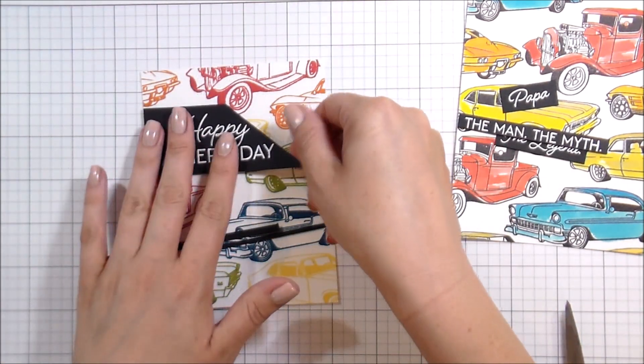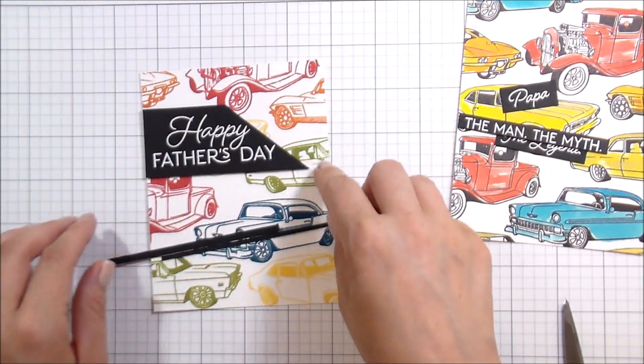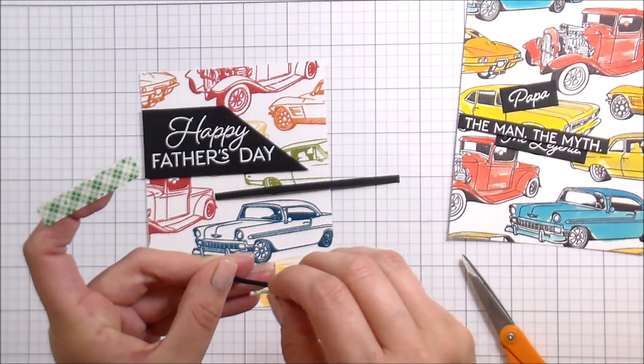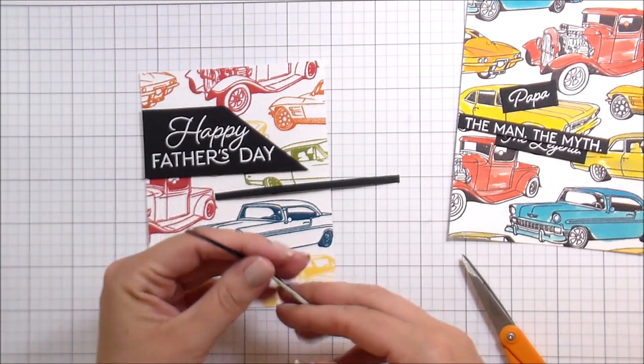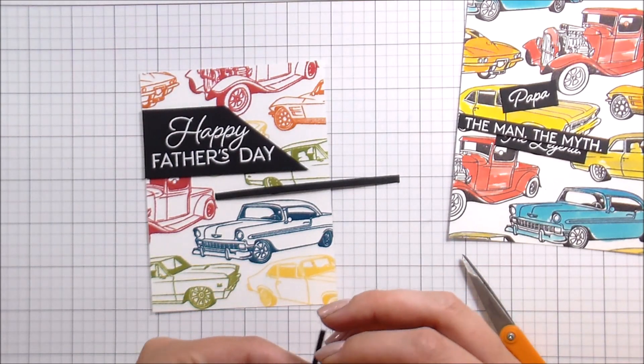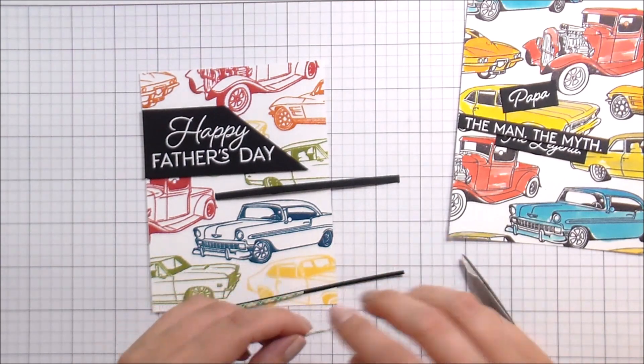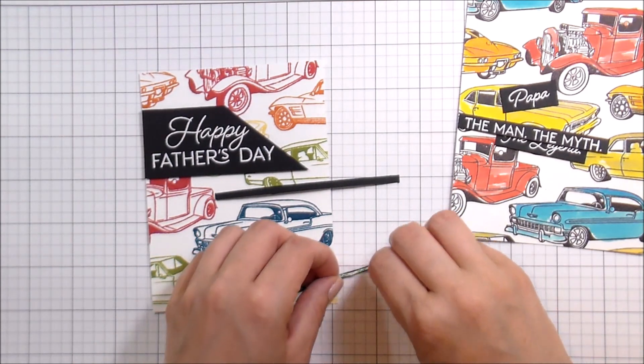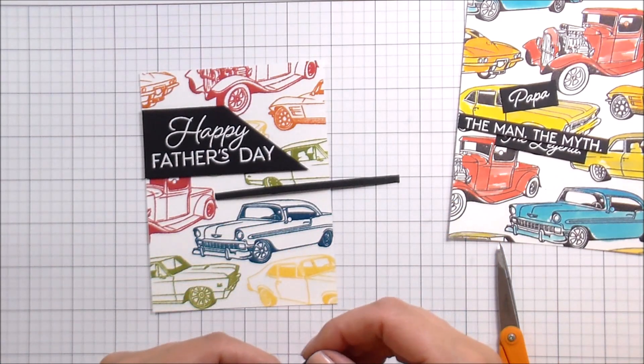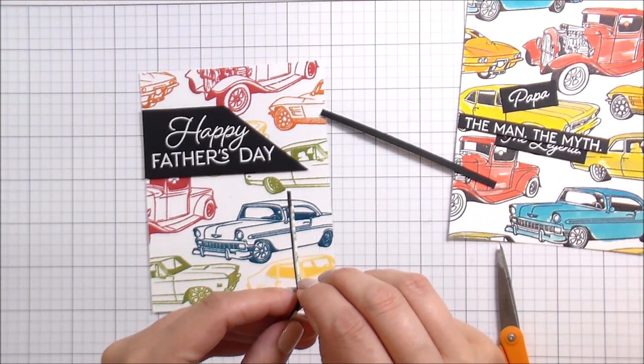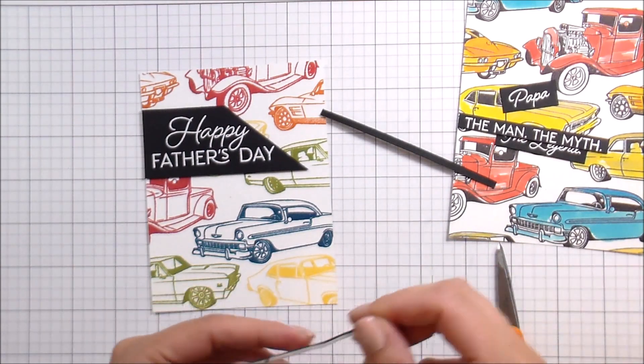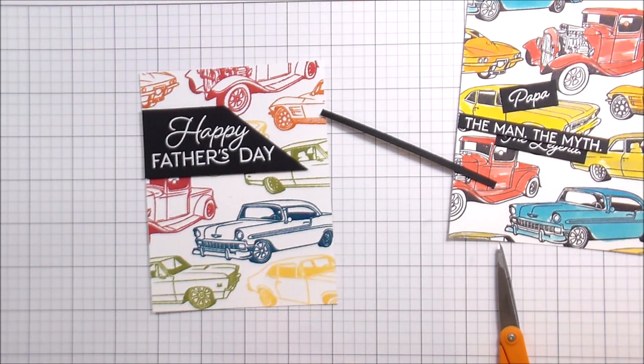I decided to go a different route. I actually used my cardstock as an embellishment. So for the Happy Father's Day, I cut it into kind of like a banner shape and then I cut two smaller pieces. This was actually the hardest part of the card, was trying to get this skinny, teeny, tiny little piece of foam tape onto this skinny little tiny, teeny piece of cardstock.